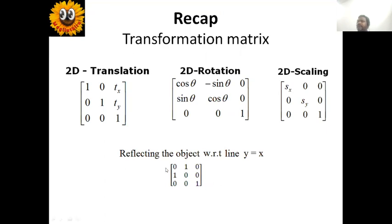For this session, you also need to remember that reflecting an object with respect to the line Y equals X uses the matrix: row one is 0, 1, 0; row two is 1, 0, 0; row three is 0, 0, 1. These four standard transformation matrices you should be familiar with to solve the following problems.